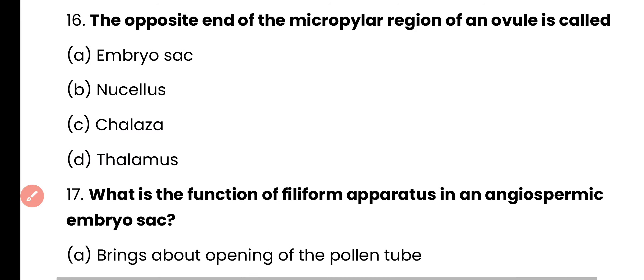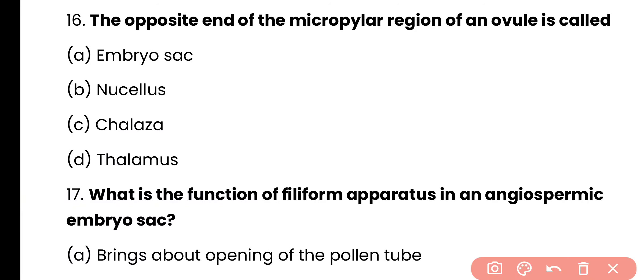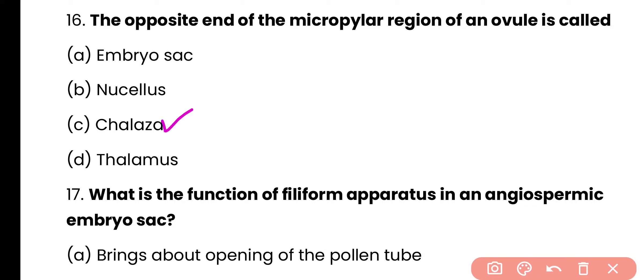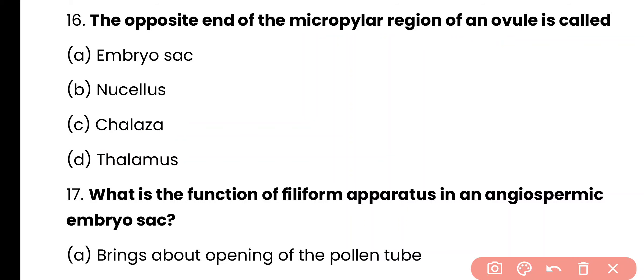Question number 16. The opposite end of the micropylar region of an ovule is called: embryo sac, nucellus, chalaza, or thalamus? The correct answer is option C. The opposite end of the micropylar region of an ovule is known as chalaza.